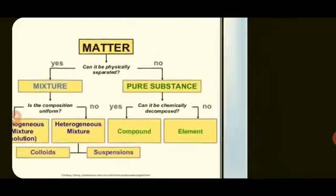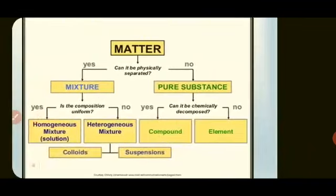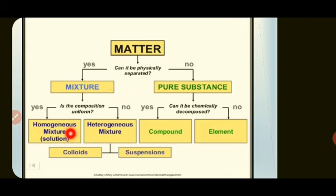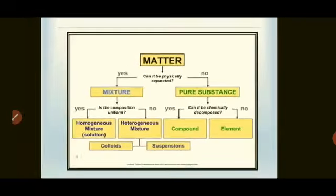So let us briefly recap once again. Matter is classified as mixture and pure substances. Mixtures are classified as homogeneous and heterogeneous, whereas pure substances are classified as compounds and elements. Let us see this in detail in the next slide.